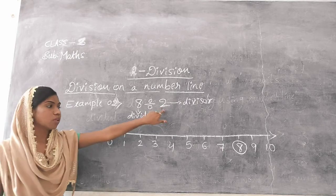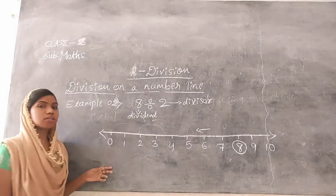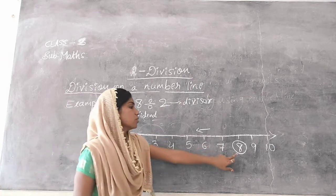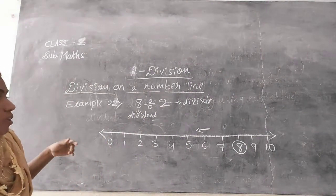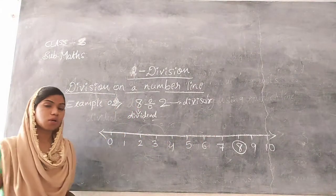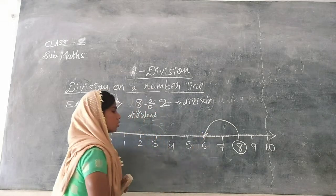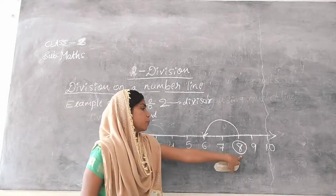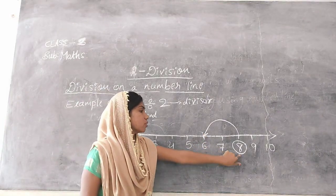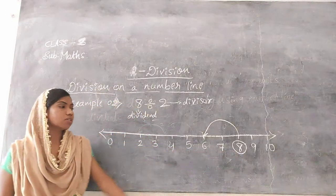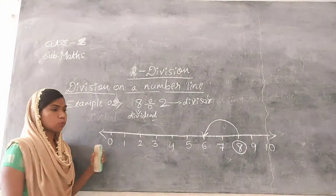From the number 8, jump towards the left side by taking 2 steps until you reach 0. In each jump, we have to take 2 steps. So from 8: step 1, step 2 — jump. After jumping from 8, I reach number 6. From 6, again jump but taking 2 steps: step 1, step 2 — jump again.